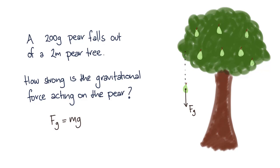Now from our last video, we know that this force is pointing downwards, and we'll model the pear as a point object with the force acting at the center of mass. So let's plug in our values. We know the mass is 200 grams, and little g is the acceleration due to gravity, which is 9.8 meters per second squared.